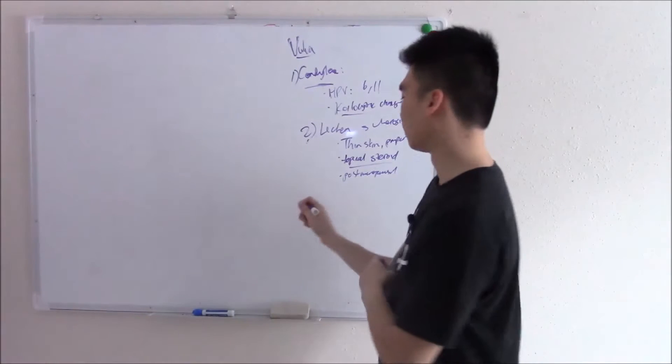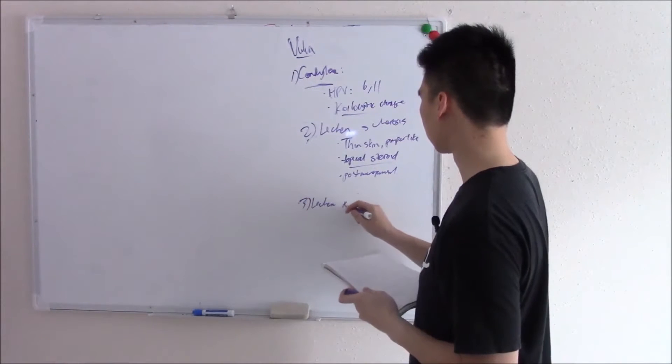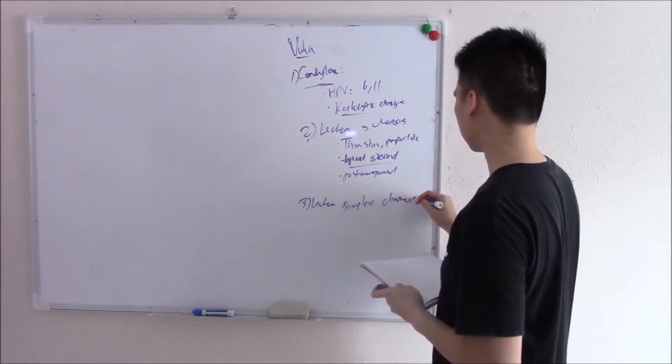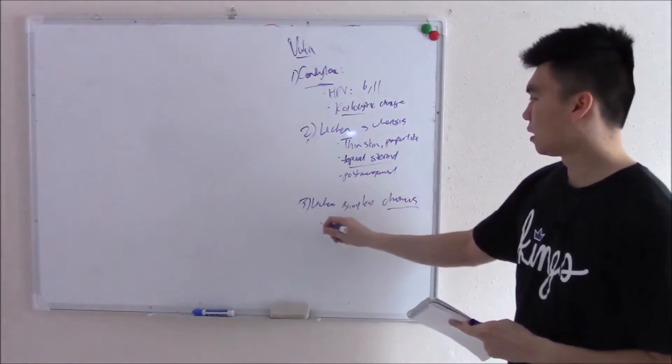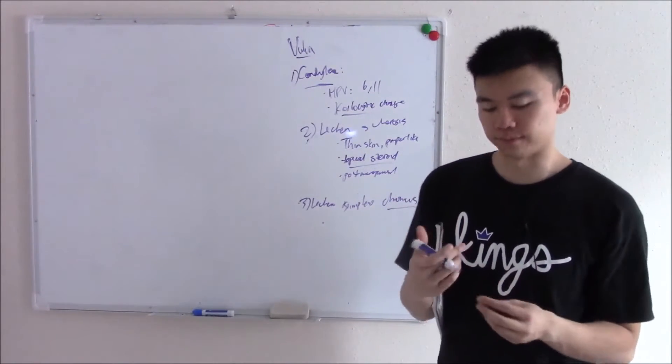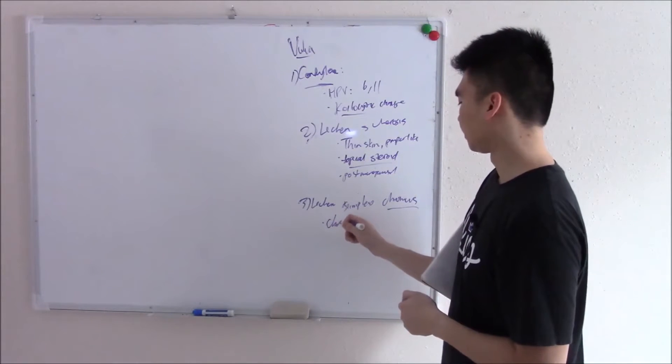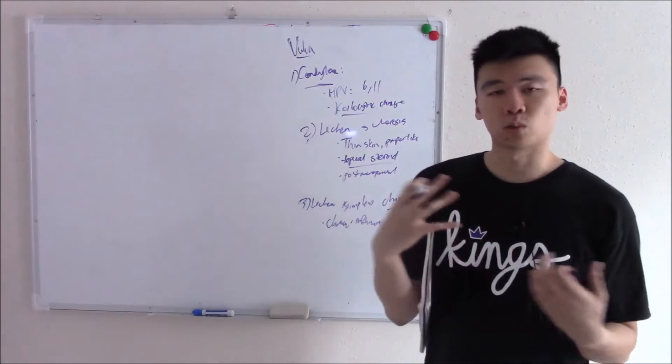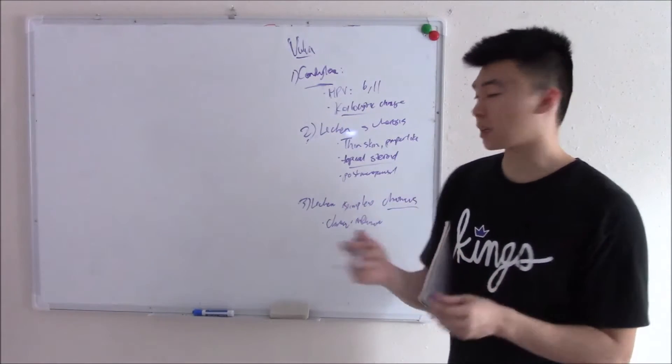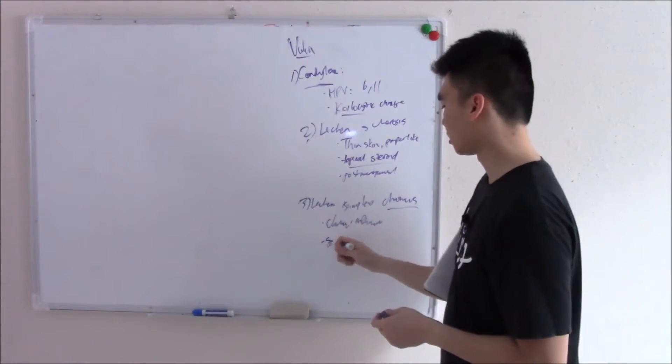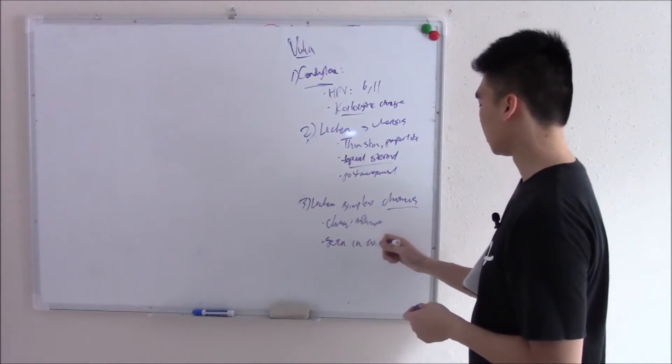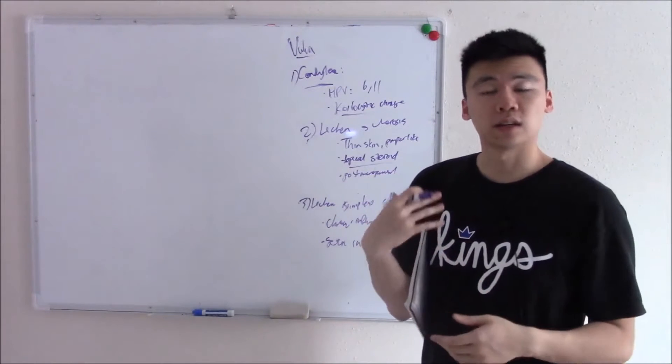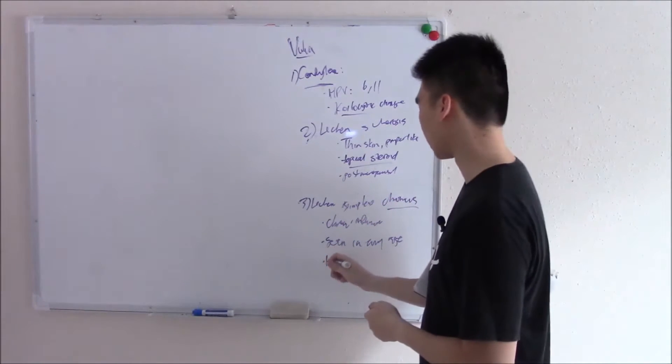On the opposite spectrum, you have lichen simplex chronicus, because it's due to chronic inflammation. Chronic inflammation for whatever reason, and because it's due to chronic inflammation it's seen in any age. Your body will try and compensate through that chronic inflammation and chronic chafing with hyperplasia.